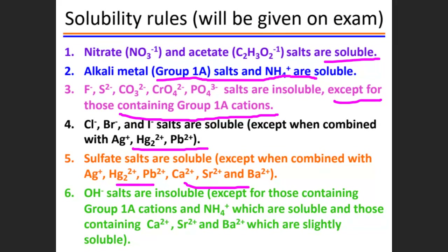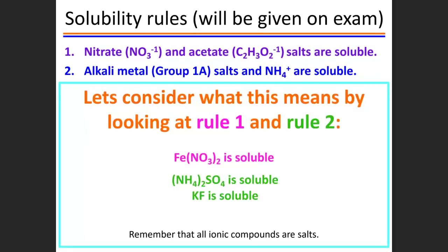Hydroxide (OH⁻) salts are insoluble, except for those containing Group 1A cations and ammonium, which are soluble. Those containing calcium, strontium are slightly soluble. Most chemistry courses combine lecture with lab class because when you see the results of reactions — like precipitation — the concepts become much clearer. You will likely do this type of experiment in a future lab class.